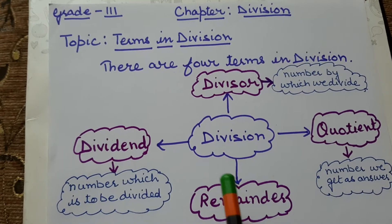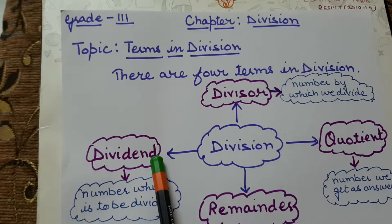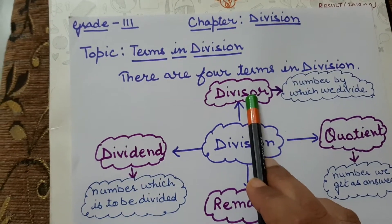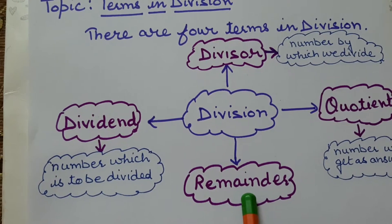I am repeating once again terms of division. First is dividend, second is divisor, third is quotient, fourth is remainder.